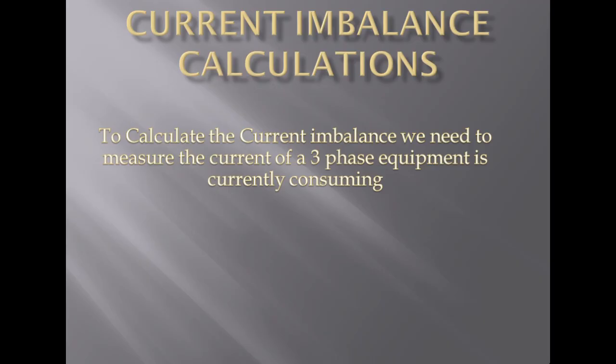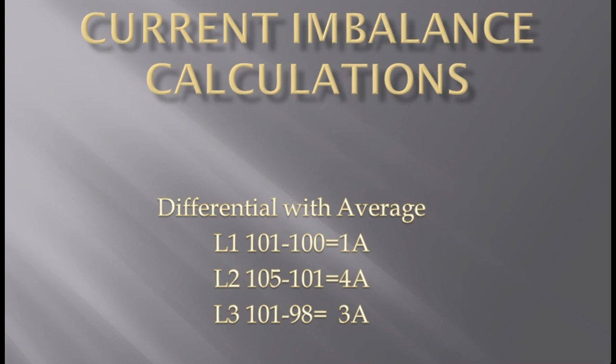The second step is to calculate the differential average by subtracting the average current value of 101 from the actual current measured at the equipment, then dividing by the average current value, which is 101.